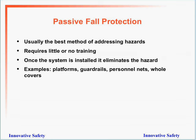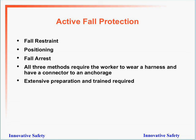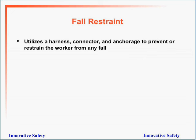Passive fall protection is usually the best method of addressing hazards, requires little or no training, and once the system is installed, it eliminates the hazard. Active fall protection — restraint, positioning, and fall arrest — all require the worker to wear a harness and have a connector to an anchorage, and extensive preparation and training are required. Fall restraint uses a harness, connector, and anchorage to prevent a worker from reaching the edge or falling into a hole. Positioning limits the fall distance to two feet or less and allows for self-rescue.